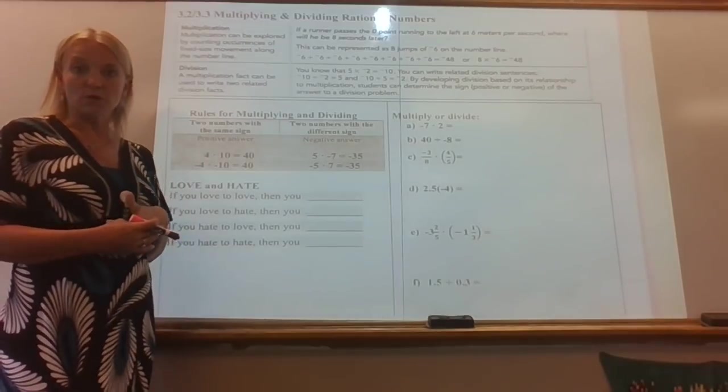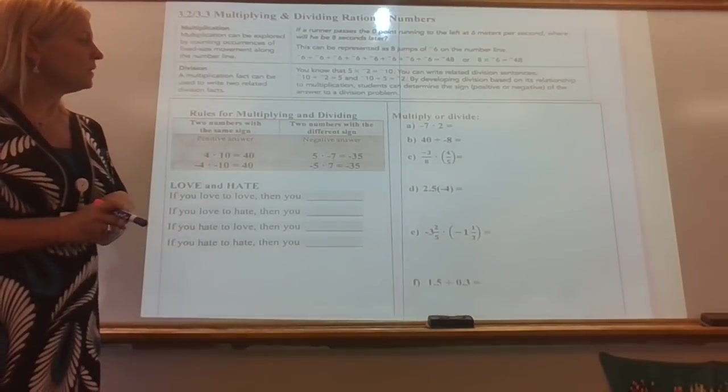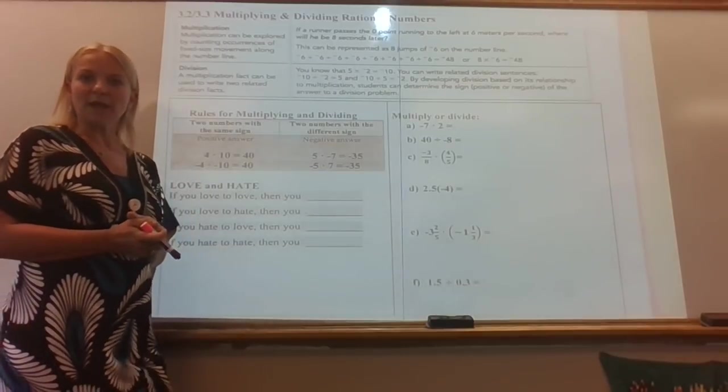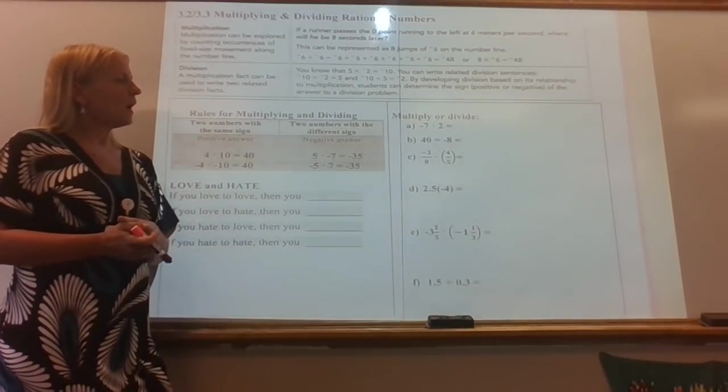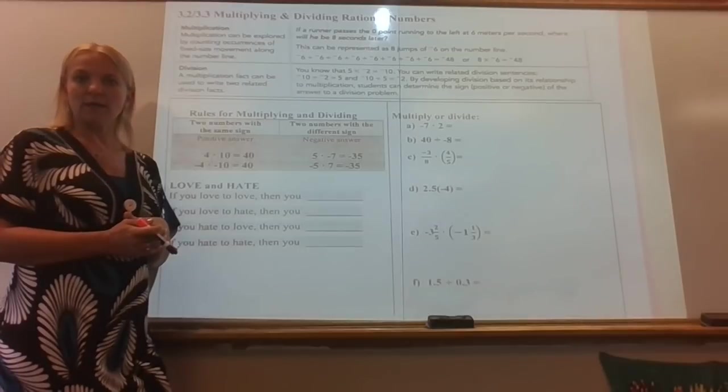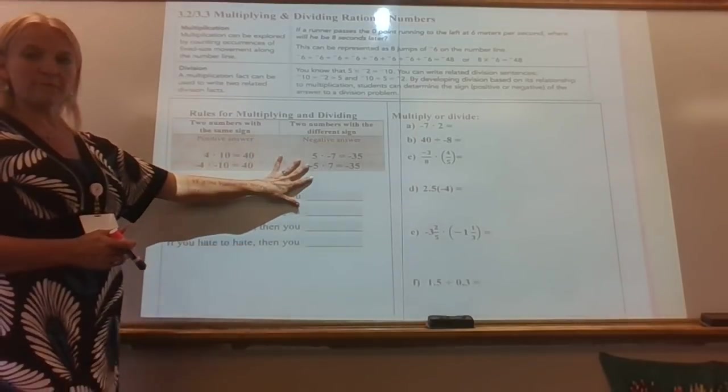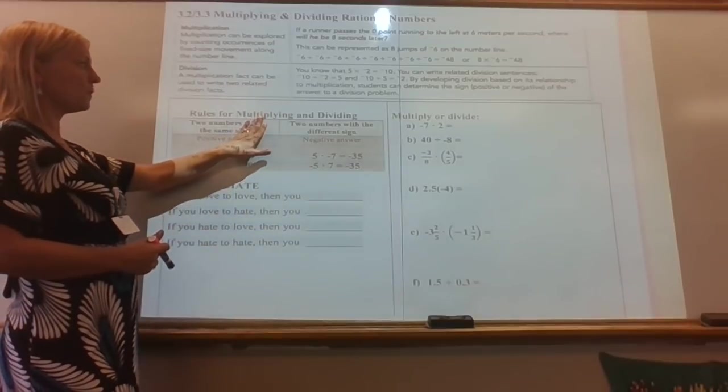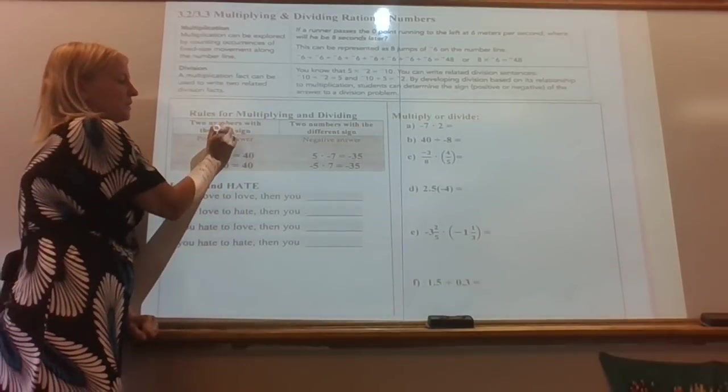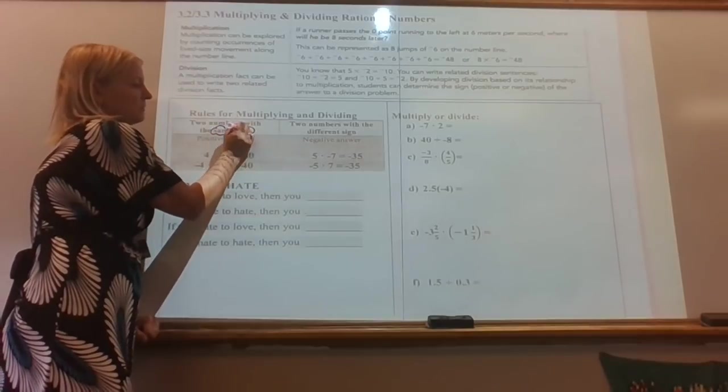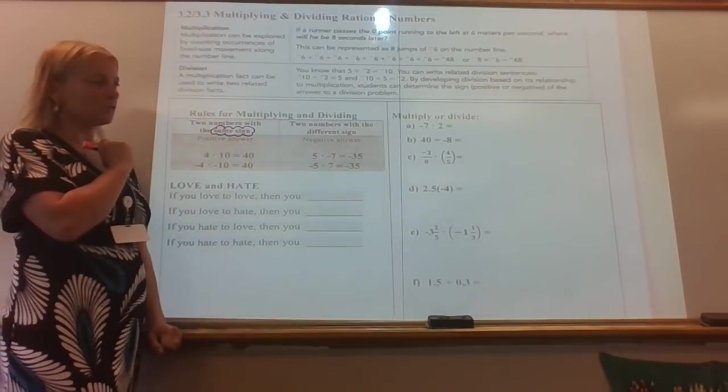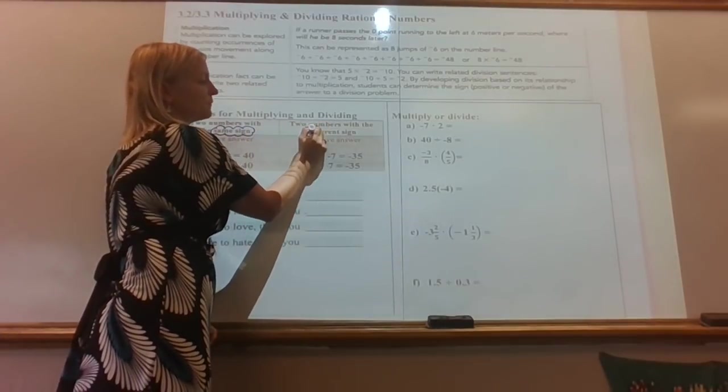They're actually a little bit easier than adding and subtracting to figure out. There's a few different ways that I can help you remember what these rules are. Here's pretty straightforward what the rules are. So when you're multiplying and dividing, you are either going to have numbers that are the same sign, both positive or both negative, or different signs.